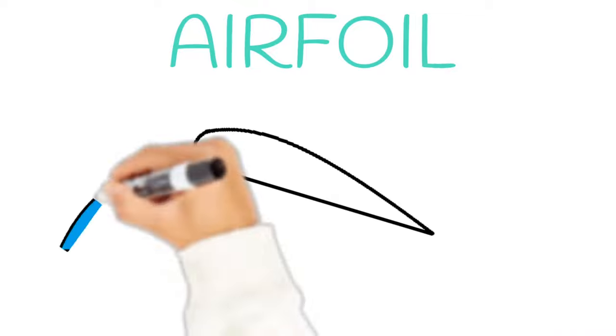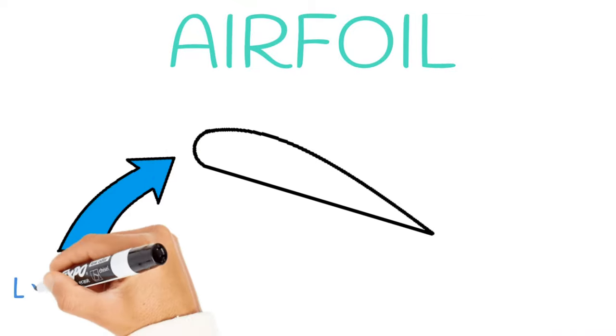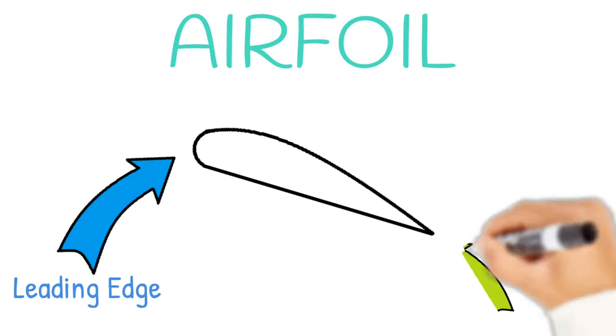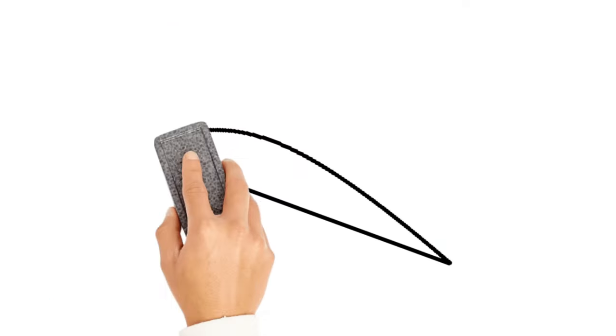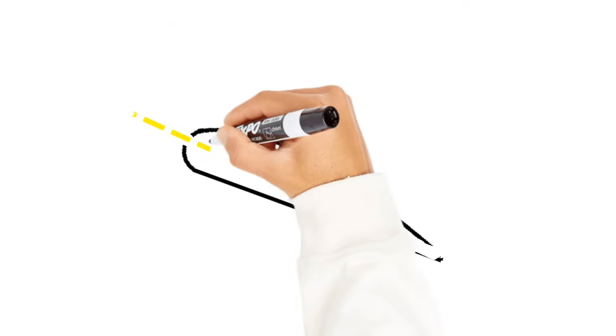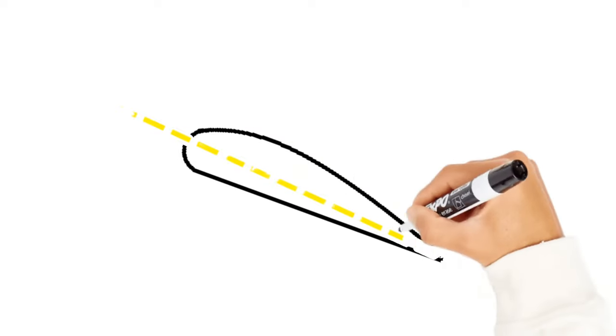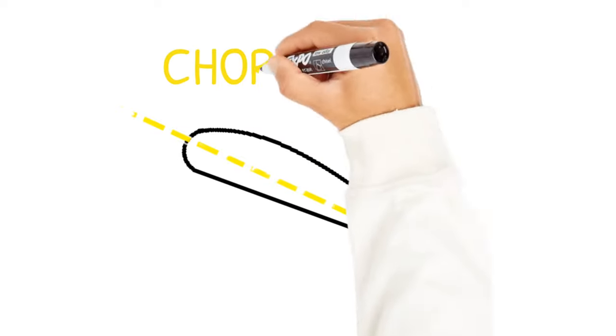This cross-section is known as an airfoil. On the front of the wing, you have what's known as the leading edge, and then on the back is called the trailing edge. In order to talk about this next part, let's draw an imaginary line from the leading edge to the trailing edge. We call this line a cord line.